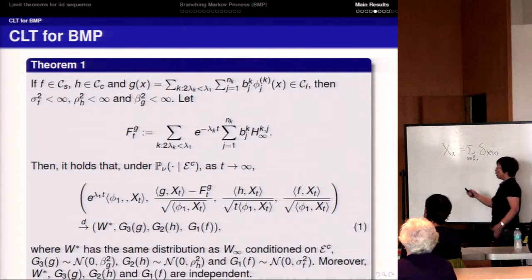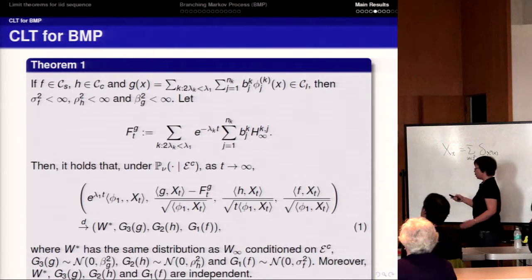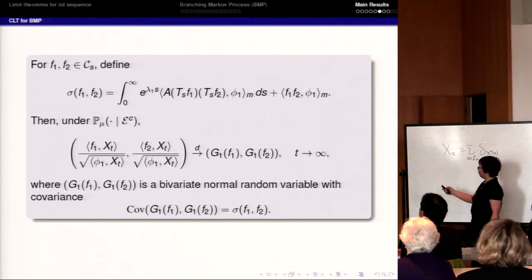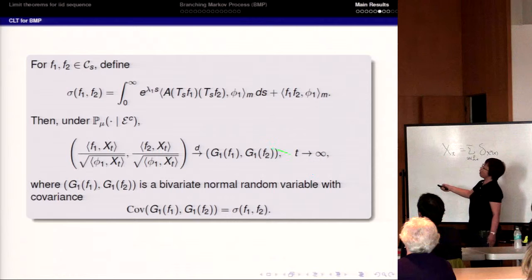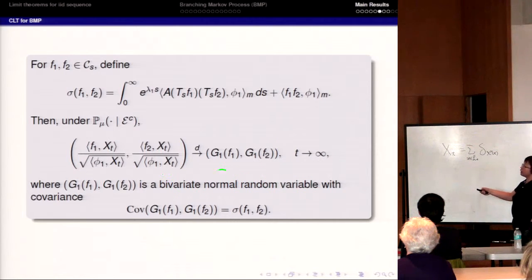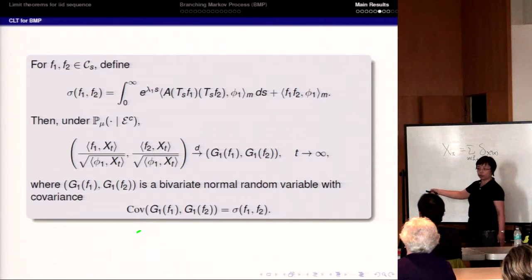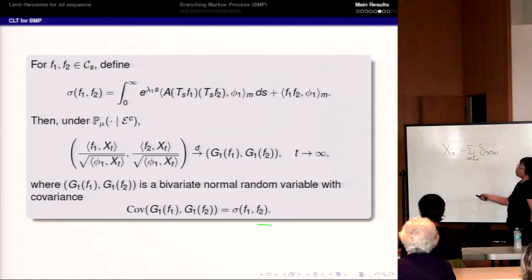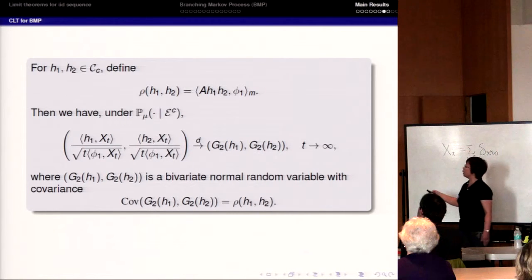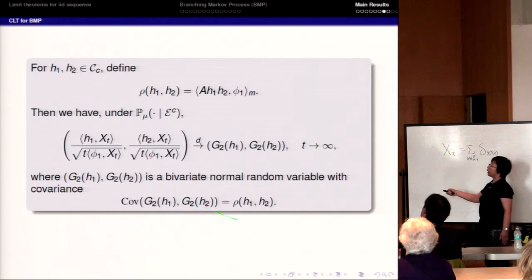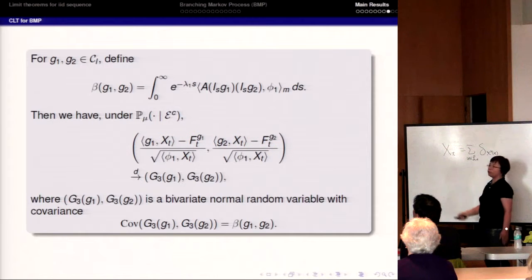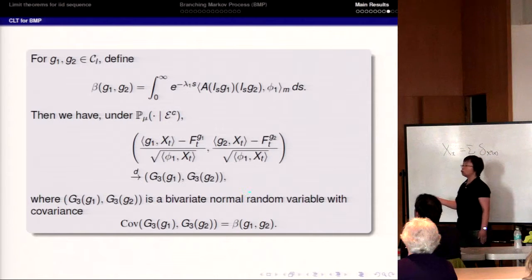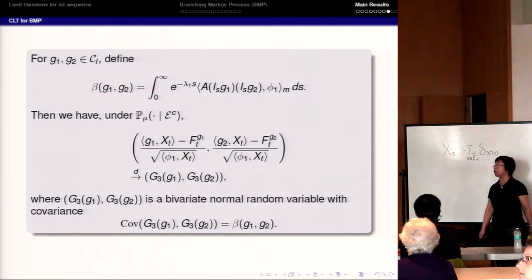It is also interesting to consider the case when multiple test functions belong to the same subspace. If f_1, f_2 both belong to C_n, we can get a bivariate two-dimensional normal limit and give the covariance. In that case the two random variables are not independent. Similarly, if h_1, h_2 belong to C_m, we get a similar result. For g_1, g_2 in C_l, we center the random variables first then normalize, and we get a two-dimensional normal random variable with computable covariance.